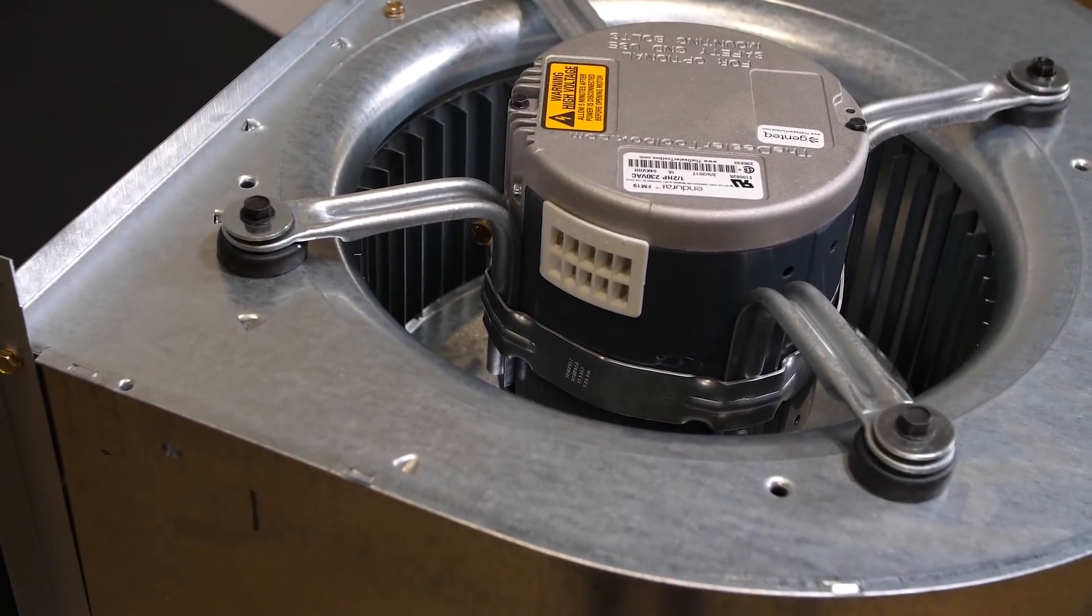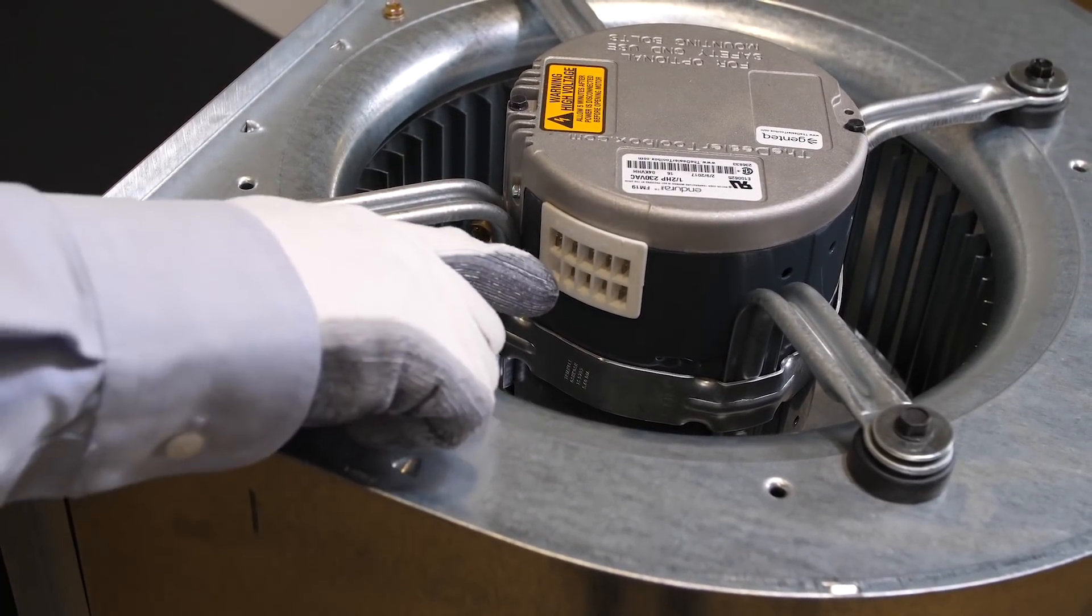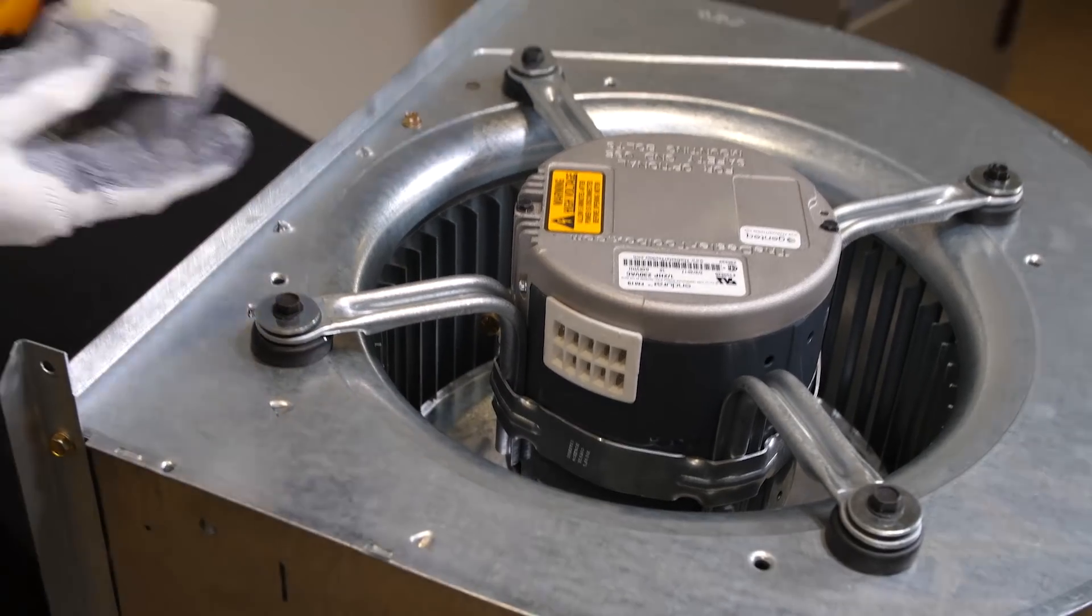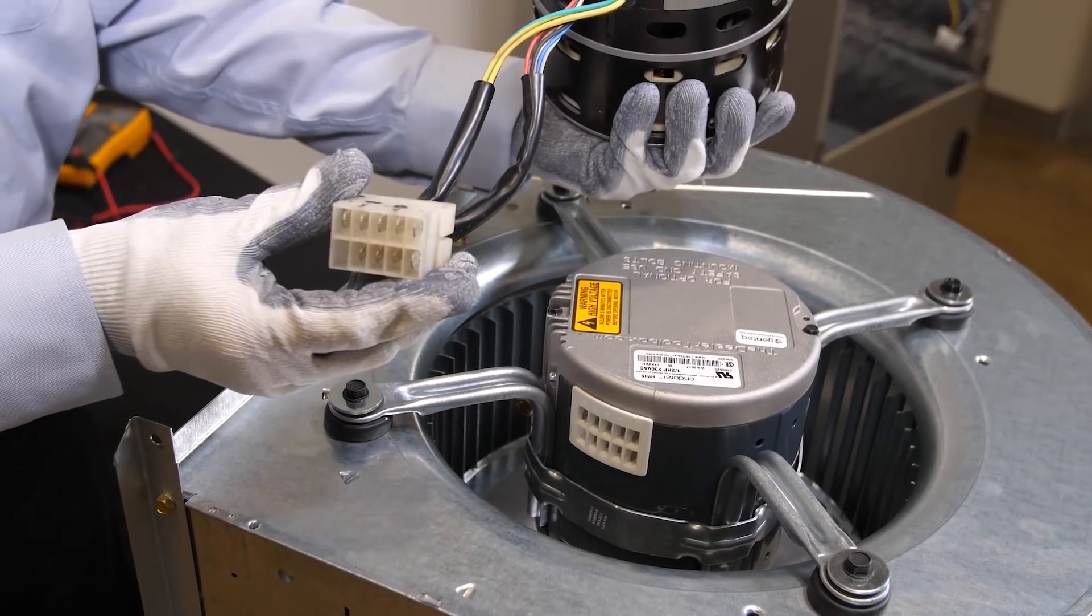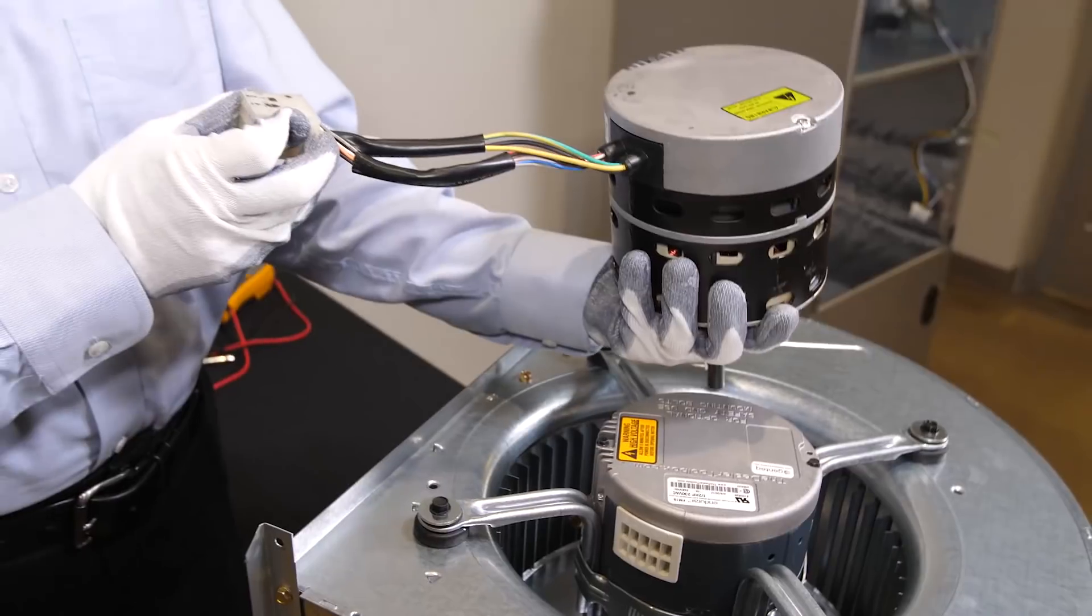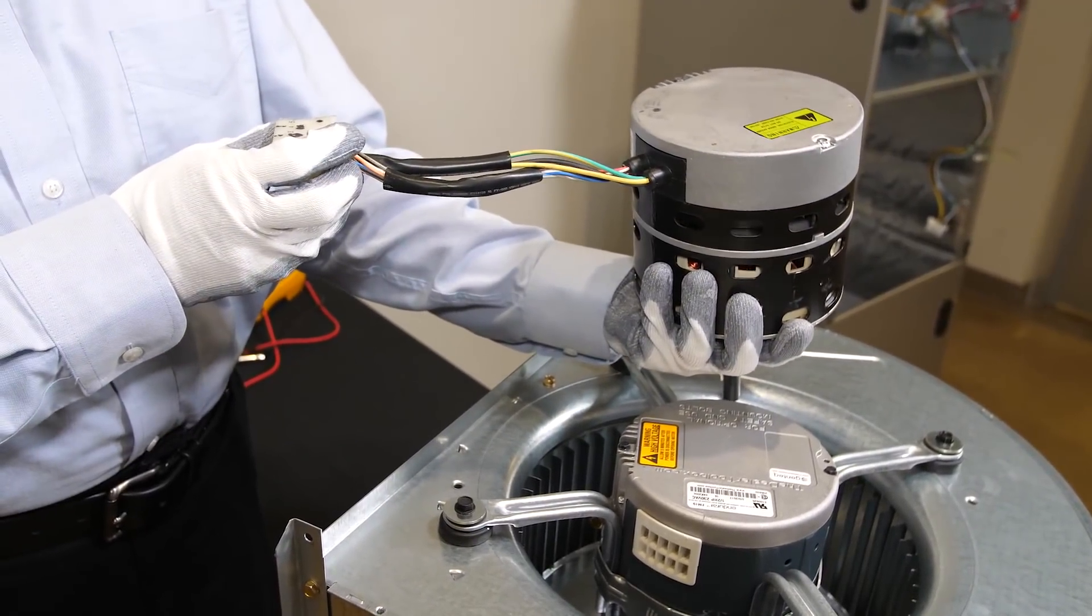At this time, it will become obvious that you have either one of two different types of tap select ECM motors. One type has the harness connections built into the motor shell. The other type has an umbilical cord with a connector on the end of a short length of wires.